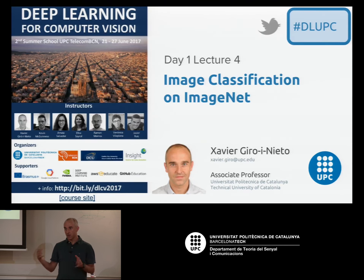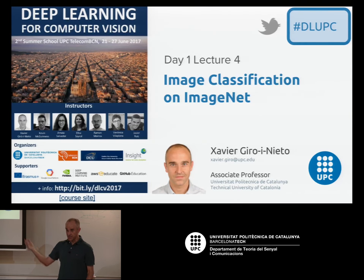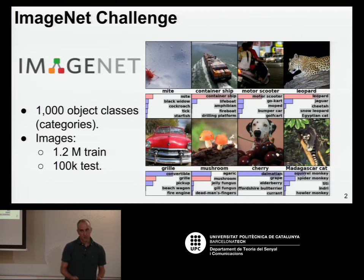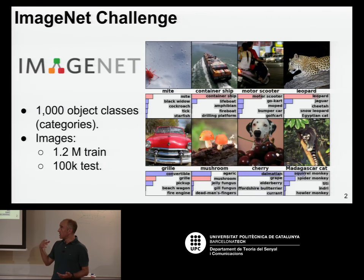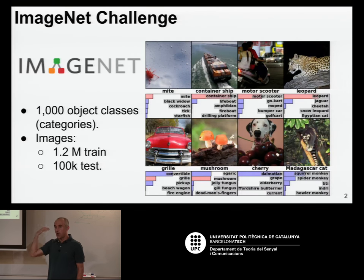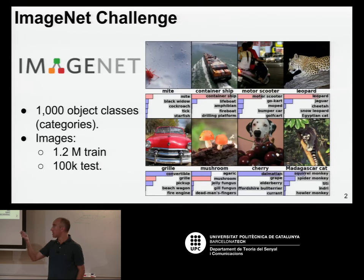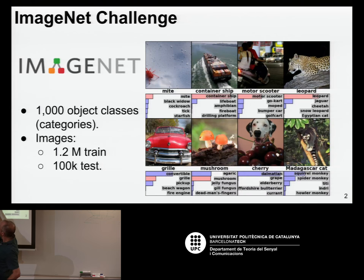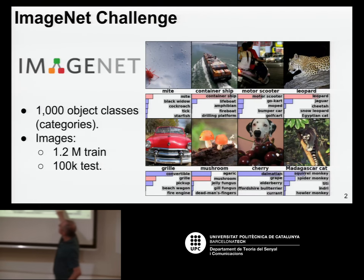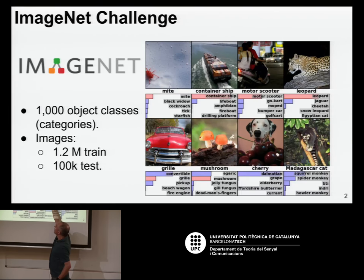I'm going to base this on models that were used in what's known as the Olympic Games of computer vision and machine learning — the ImageNet challenge. The ImageNet task: given an image, try to predict which object category appears in it. For example, in this second figure, you would like to predict 'container ship.'